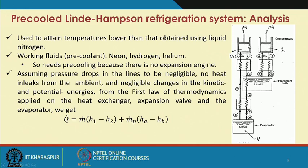In the main system, we have a compressor doing some work W1. The gas going inside the compressor is compressed isothermally, so we are rejecting some amount of heat Q1. Then from point 2 to 3 it is exchanging heat to get cooled down, and this is done from the return stream from the liquid reservoir.